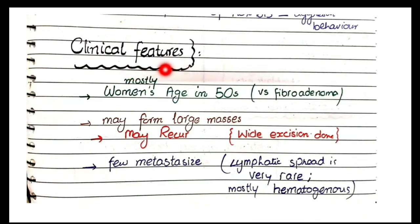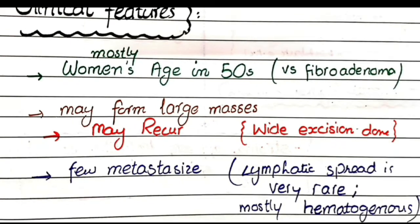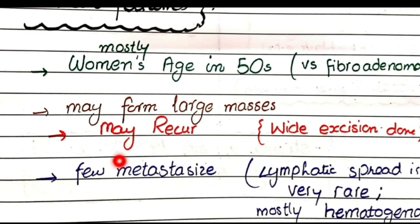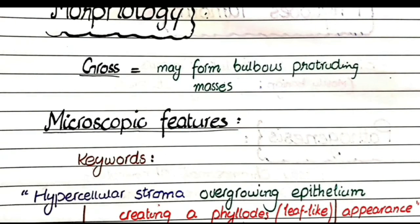Clinically, phyllodes tumor affects women mostly in their 50s — another difference from fibroadenoma, which affects women in their 20s–30s. Phyllodes tumors form relatively larger masses and, being more aggressive, have a higher chance of recurrence. Wide excision with larger tissue margins is required to eradicate the disease completely. Some phyllodes tumors may show metastasis, predominantly hematogenous rather than lymphatic. Grossly, they appear as large bulbous protruding masses.